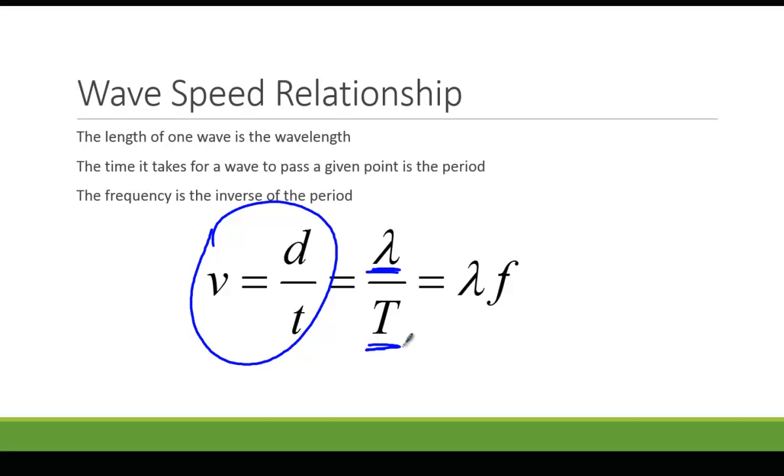So we can say that the wave speed, the speed of a wave, is equal to the wave's wavelength divided by the period, and we know one over the period equals the frequency.